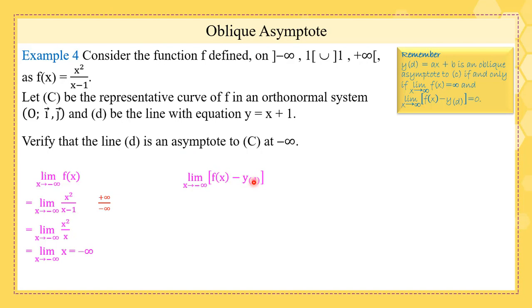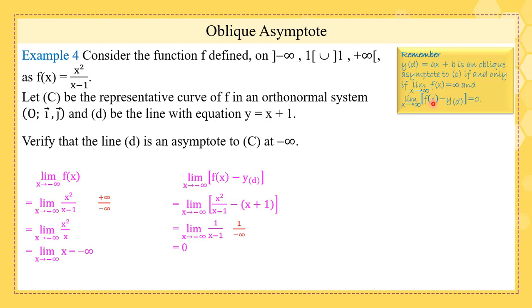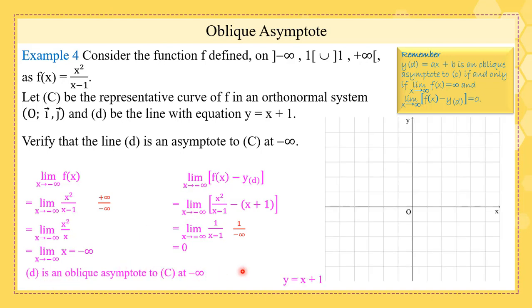Now we find the limit of f(x) minus y of D as x tends to minus infinity. This is the limit of x²/(x−1) minus (x+1). Simplifying, we get the limit of 1/(x−1), and 1 over infinity is 0. The two conditions are satisfied — the limit at infinity is infinity and the limit of f(x) minus y of the line is 0 — so D is an oblique asymptote to C. Graphically, when x tends to minus infinity, the distance between the line and the curve tends to 0.